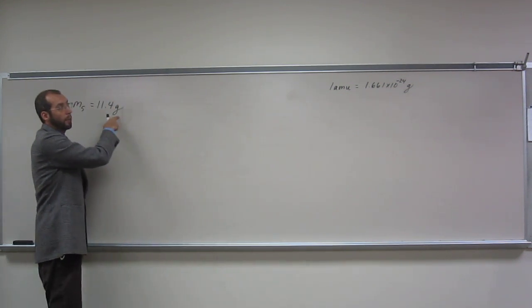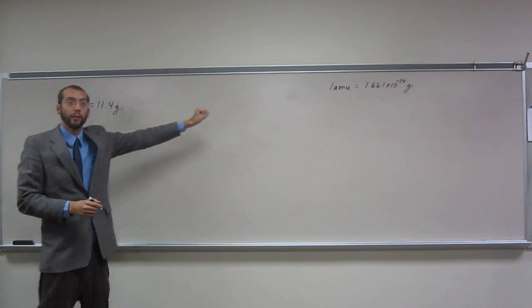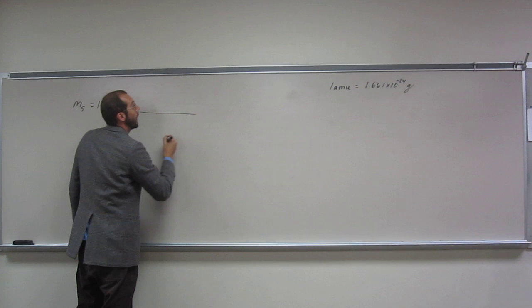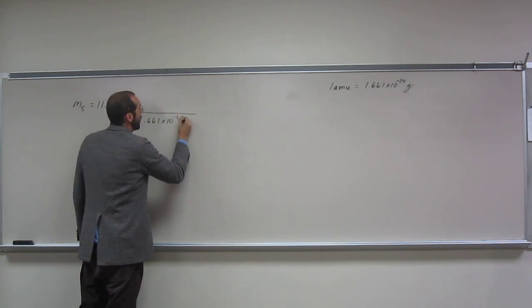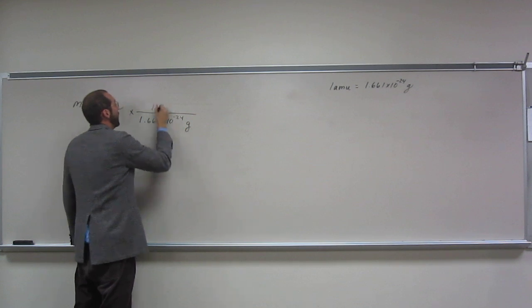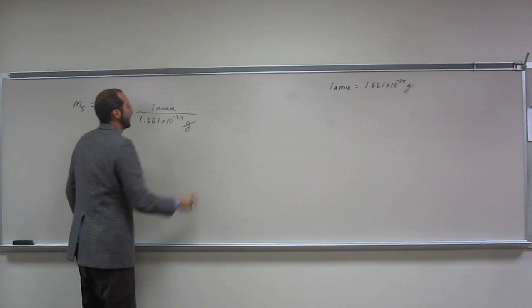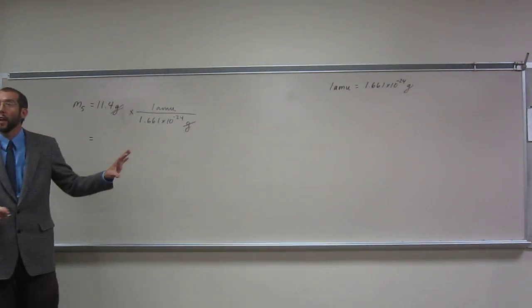So, we've got grams, we want AMU, and we have the conversion factor, right? So all we've got to do is multiply that by, grams cancels, giving us mass units of AMU.